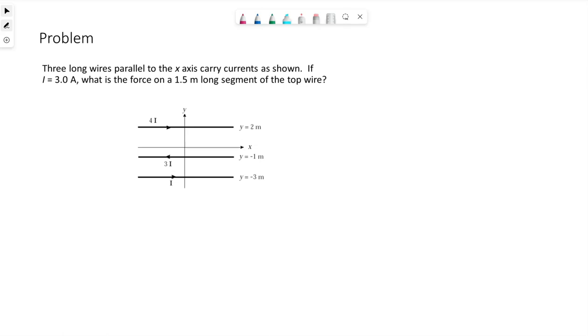Okay, if you've been watching the example videos I've made, you've seen this picture before, but it was a different question before. Before we were asking for the magnetic field at the origin, so all three wires were creating a magnetic field at the origin, but this question wants to know the force. There's going to be a magnetic force on each of the wires.